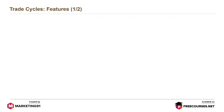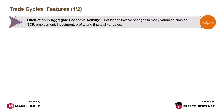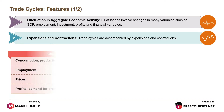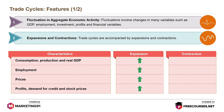Features of a trade cycle include fluctuations in aggregate economic activity. Fluctuations involve changes in many variables such as GDP, employment, investment, profits, and financial variables. Trade cycles are accompanied by expansions and contractions. During expansions, there is an increase in consumption, production, real GDP, employment, prices, profits, demand for credit, and stock prices. During contraction, there is a decrease in these factors.